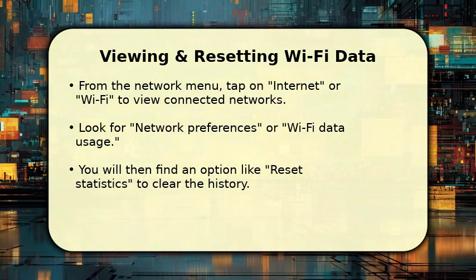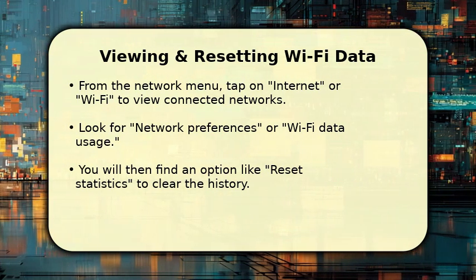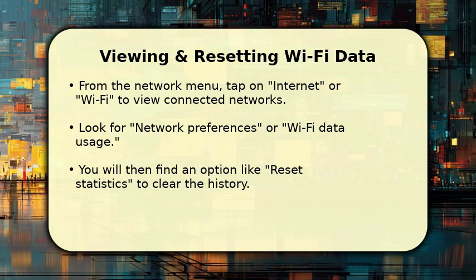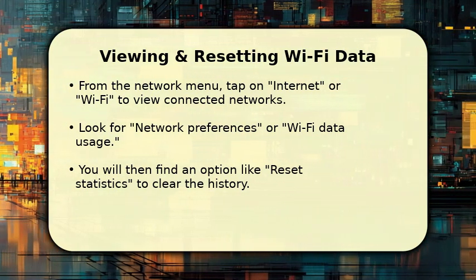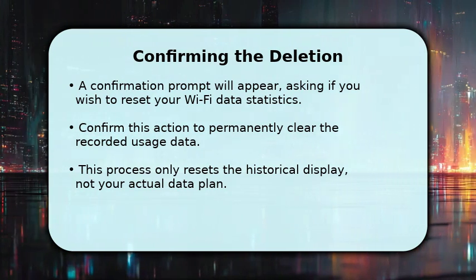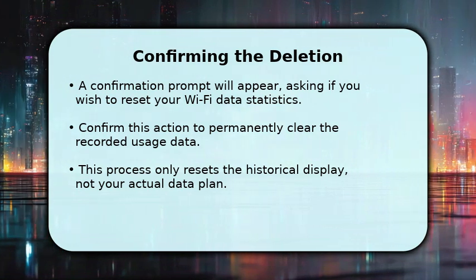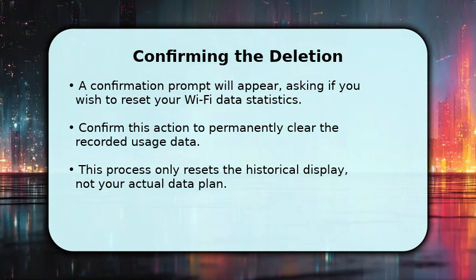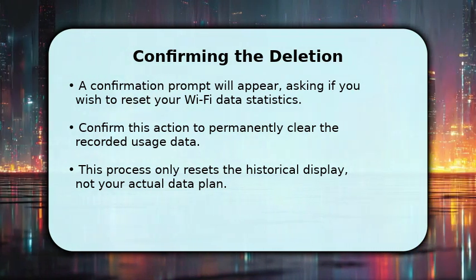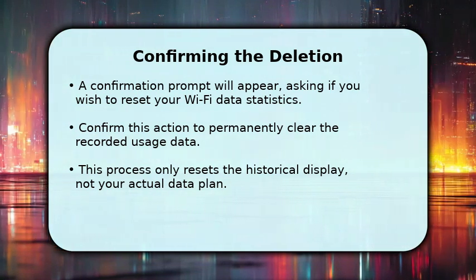Selecting this will display a detailed breakdown of your data consumption over a specific period. Look for three vertical dots, or a Reset Statistics button, then tap it to clear this information. A small pop-up window will now appear asking you to confirm if you want to reset your Wi-Fi data usage statistics. Tap Reset or OK to finalize this action. This process permanently clears the displayed historical data, effectively wiping the record of your past Wi-Fi usage from your device's internal tracking.